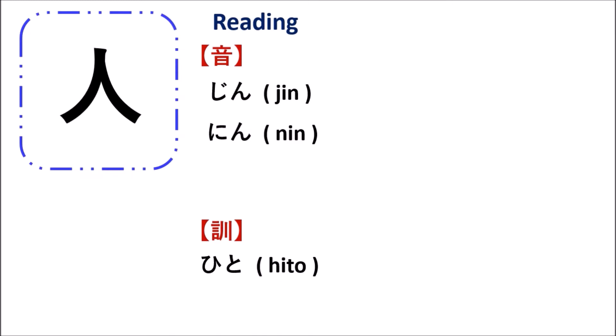For this kanji, as you see here, we have the on'yomi reading and the kun'yomi reading. First, we are going to look at the on'yomi reading. Let's pronounce together: jin, nin.